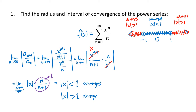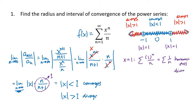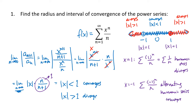The ratio test does not tell us what happens when the absolute value of x equals 1, which occurs at plus or minus 1. Those we have to consider separately. When x equals 1, we get the sum of 1/n, which is the harmonic series — that diverges, so positive 1 is not included in our interval. When x equals negative 1, we get the alternating harmonic series, which converges, so negative 1 is included in our interval of convergence.